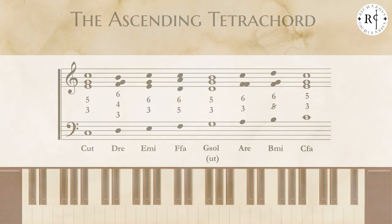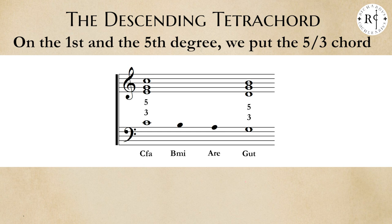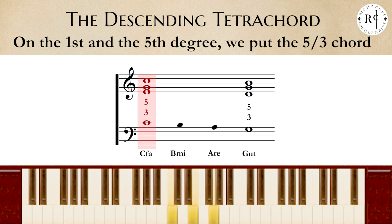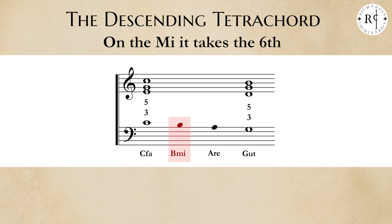The descending tetrachord is the opposite of the ascending tetrachord. On the first and the fifth degree, also in this case, we put the third and fifth chord, because they are the pillars. Let's proceed from what we already know: on Mi it takes the sixth. So, let's put on B Mi the third and sixth chord, but without the diminished fifth, because it is a descending scale.